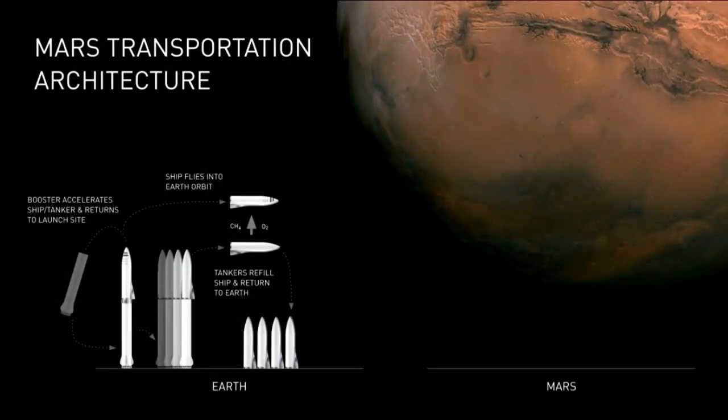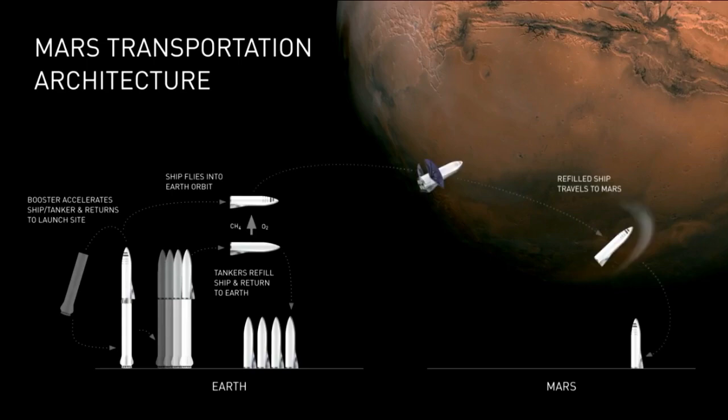It's the same approach that I mentioned before, which is you send the spaceship up to orbit, you re-tank it or refill it until it has full tanks, and it travels to Mars, lands on Mars. For Mars, you will need local propellant production.